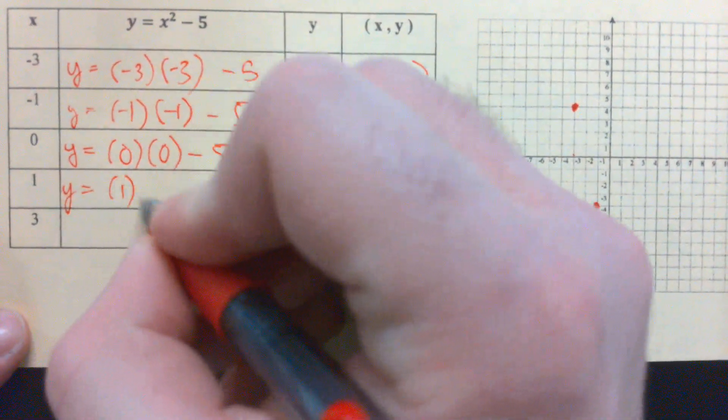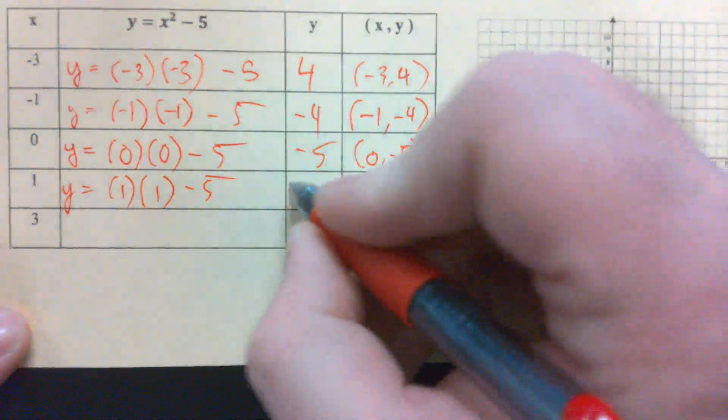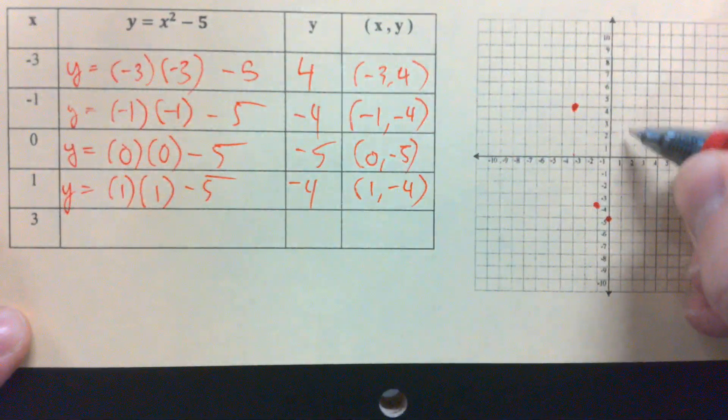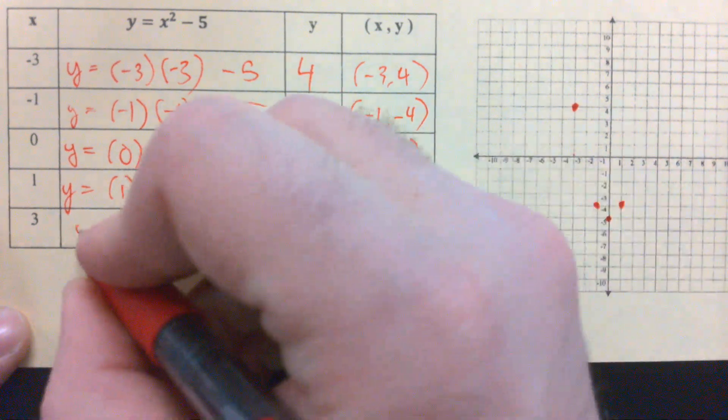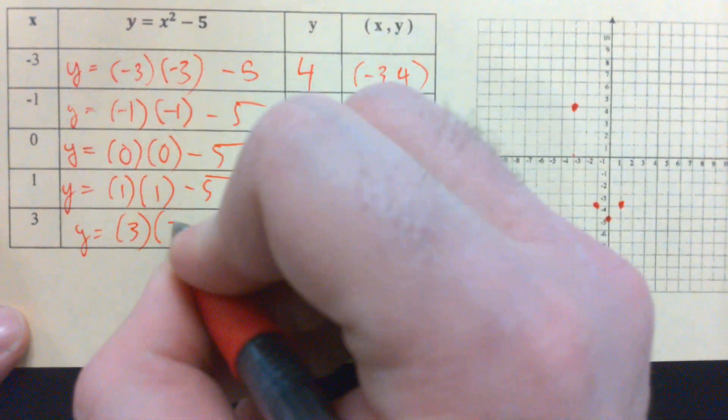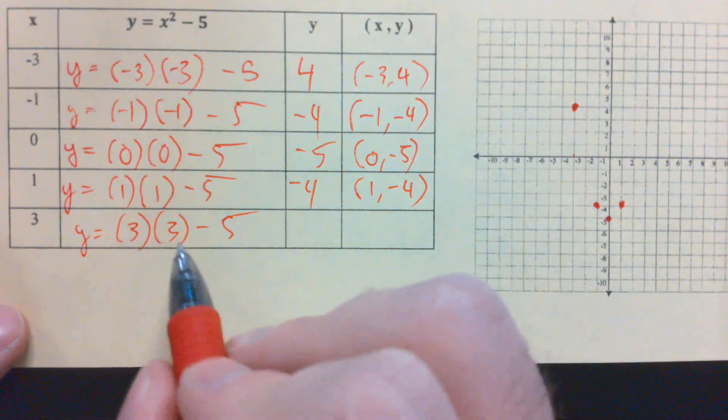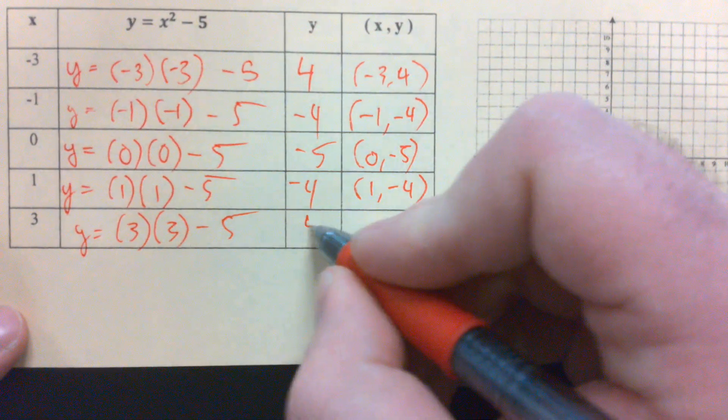Plug in a 1. 1 times 1 is 1. 1 minus 5, again, is negative 4. We're just following that pattern. Over 1, down 4. And we'll plug in a 3. 3 times 3 is 9. 9 minus 5 is 4.